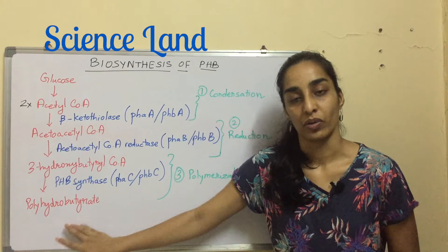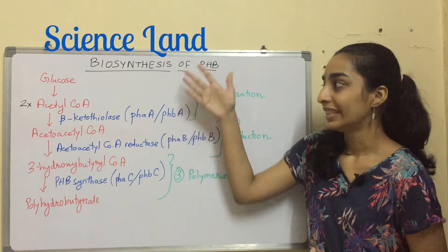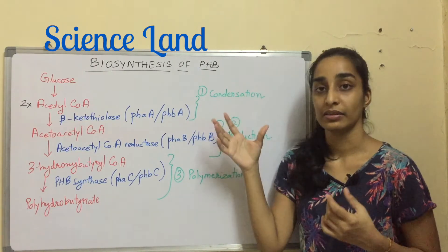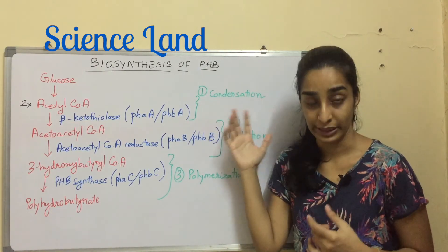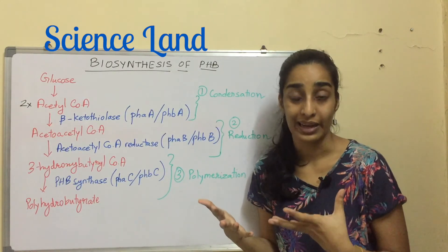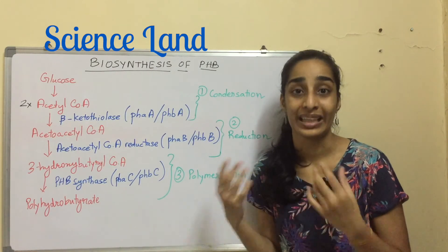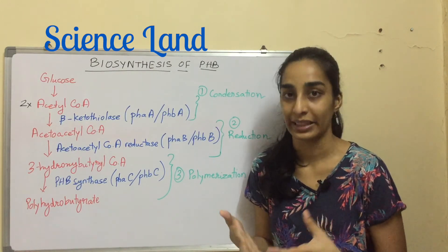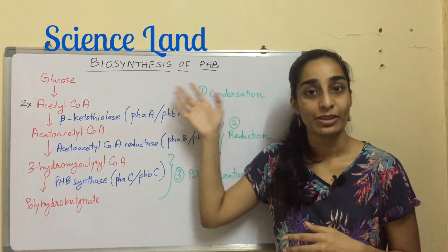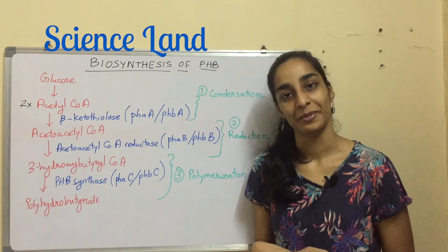PHB synthase produces polyhydroxybutyrate, which is PHB. These are the three steps involved in the biosynthesis of PHB. This entire cycle takes place in microorganisms, and the PHB is accumulated in the cytoplasm of the bacteria. That's it for today's video — thank you so much for watching, bye bye.